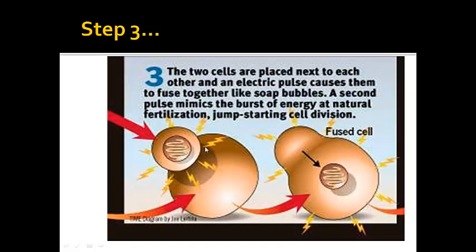Then what they did is they fused that nucleus with the cell from the sheep that didn't have a nucleus. So we have the nucleus of the first sheep and the cell of the second sheep, and they were fused. That's not very hard to do from a laboratory standpoint — it's not hard to take the nucleus out of cells, leave them empty, and use the nucleus.